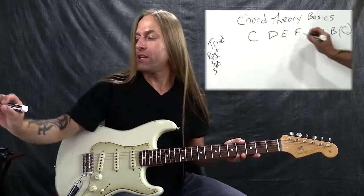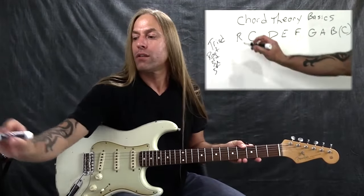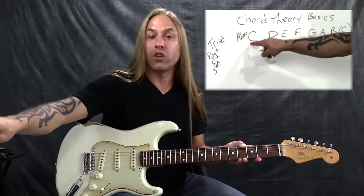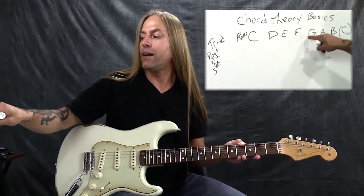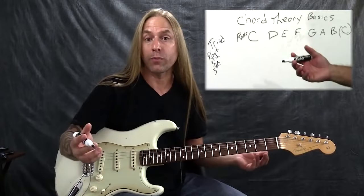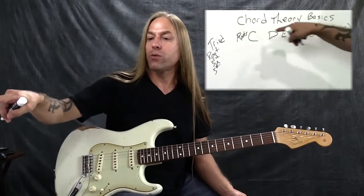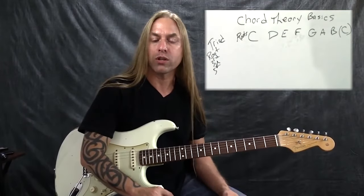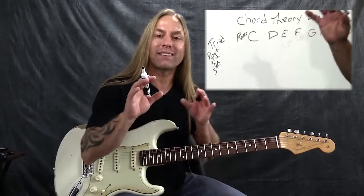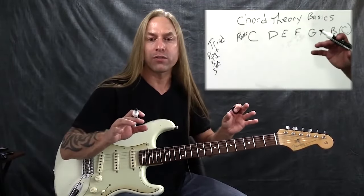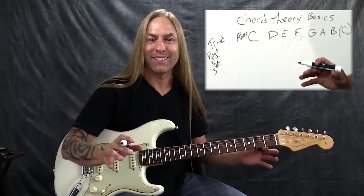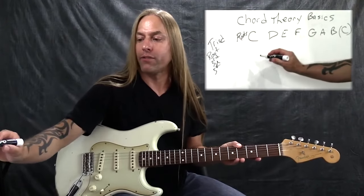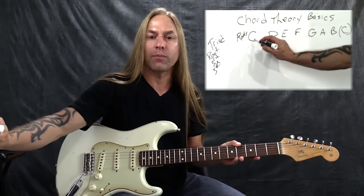Now we've got our key of C here. These are our roots. When you're in the key of C, we get the notes C, D, E, F, G, A, and B. We know that because the key of C has no sharps and no flats. This seven-note scale is going to generate seven individual independent chords, and every key will. The beauty of this is that by the time we get done, you're going to know all the chords for all the keys. So we have to have a root, a third, and a fifth — we're talking about the distance from the root itself.